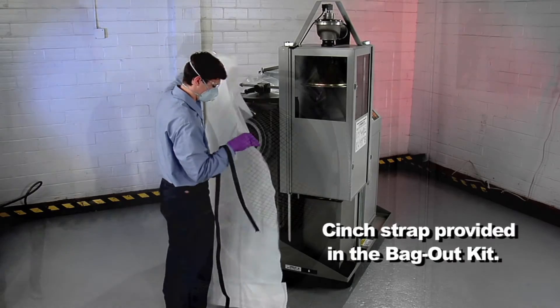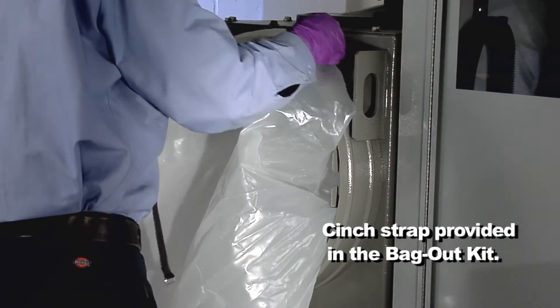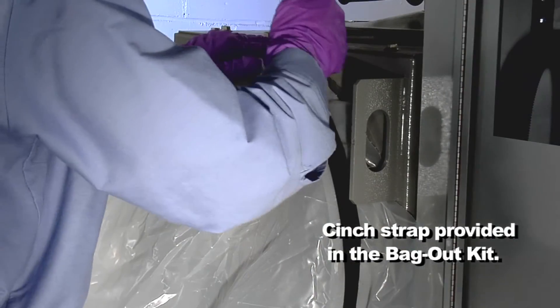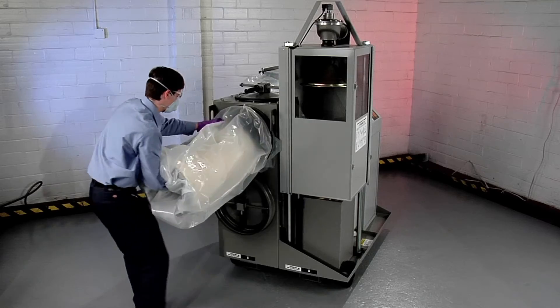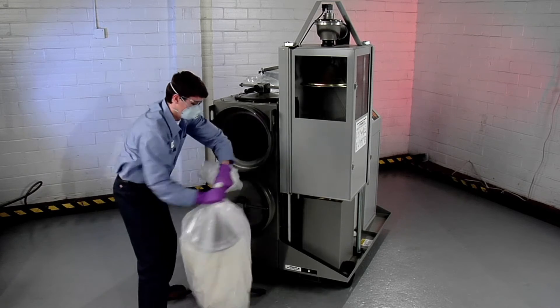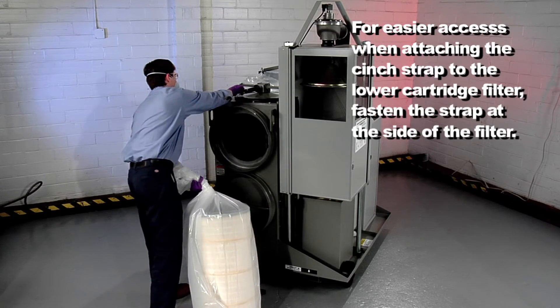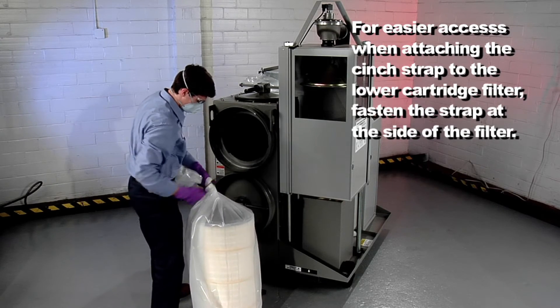Use the cinch strap to securely attach a bag to the collar of the cartridge chamber. Pull the used filter out of the dust collector and into the bag. Twist the top of the bag and secure it with the cable tie provided. Release the cinch strap from the collar.